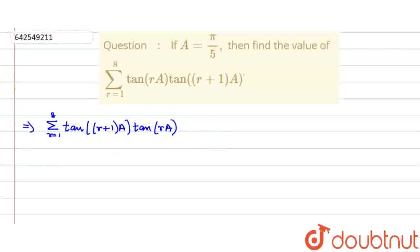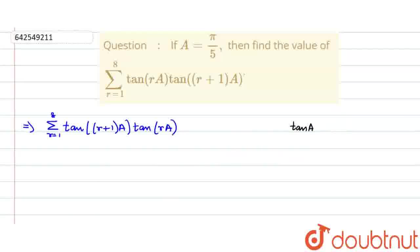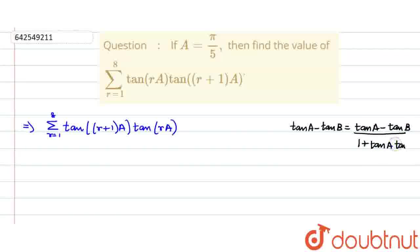Now, we know there is a formula: tan(a) minus tan(b) is given by tan(a−b) divided by 1 plus tan(a)·tan(b). Wait — not plus, this is minus. So, tan(a) minus tan(b) equals tan(a−b) divided by 1 plus tan(a)·tan(b).